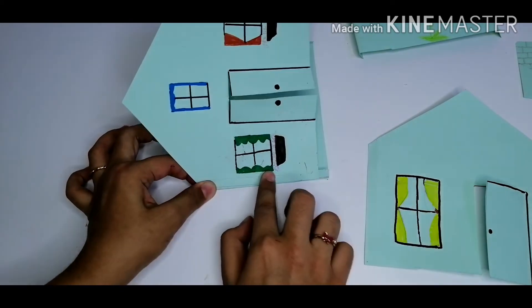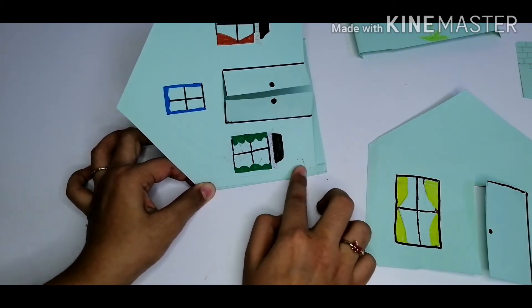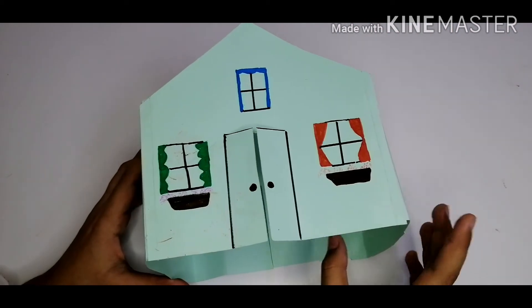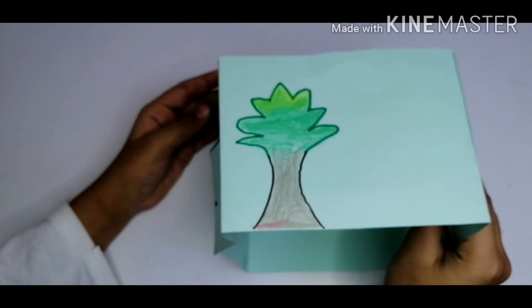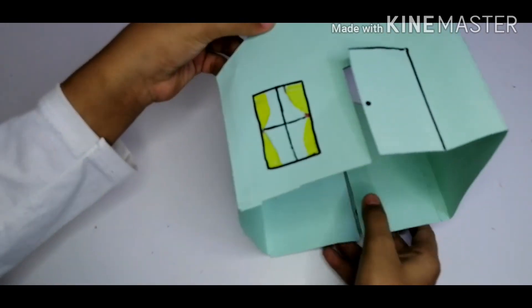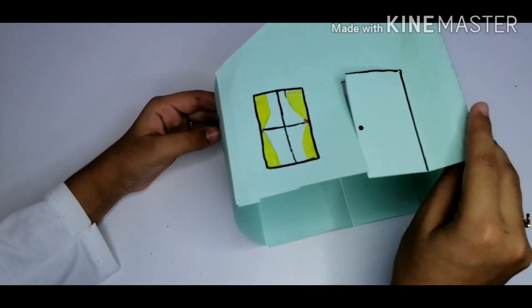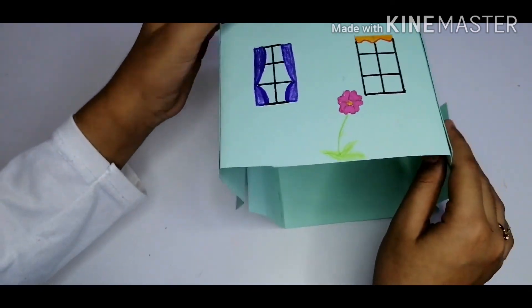This is the front side of the house, this is the side of the house, this is the back side of the house, and this is the other side of the house.